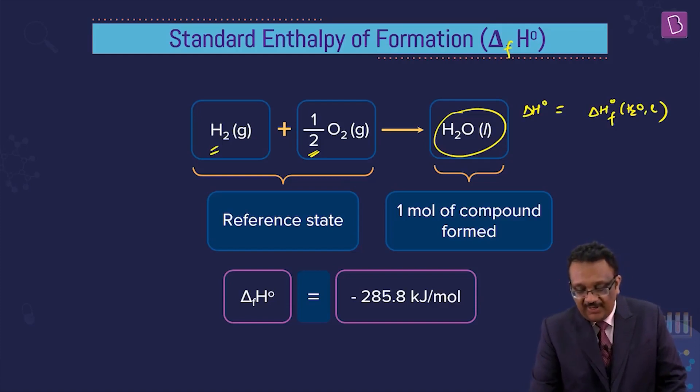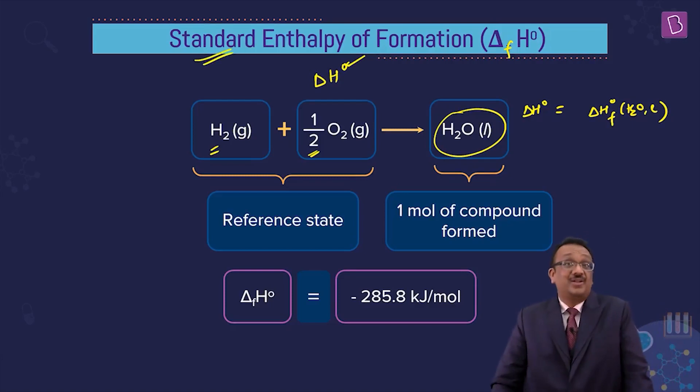The formation is denoted by F. And the standard state, you know it? It's a circle on the top of it, delta H°. The circle denotes the standard state. If it is in standard conditions, then delta H° is the notation. Delta H°f is minus 285.8 kilojoules per mole. What is it? It's the enthalpy of formation of water.